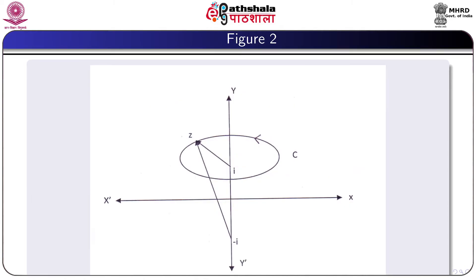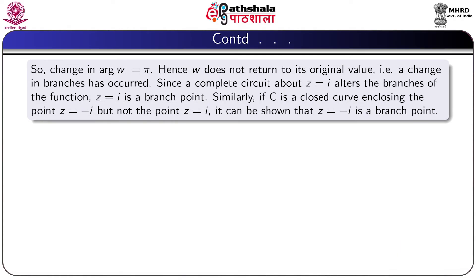After one complete circuit, arg(z−i) changes by 2π but arg(z+i) remains fixed. So Δarg(w) = π. Hence w does not return to its original value — a change in branches has occurred. Since a complete circuit about z = i alters the branches of the function, z = i is a branch point. Similarly, it can be shown that z = −i is also a branch point.